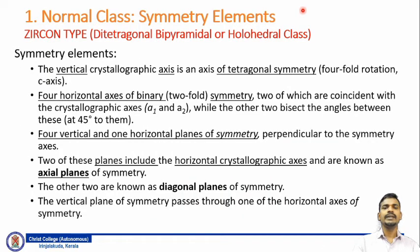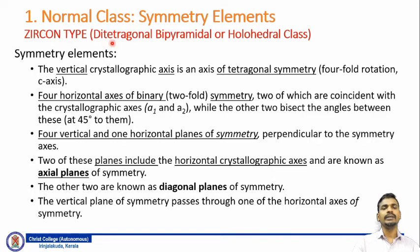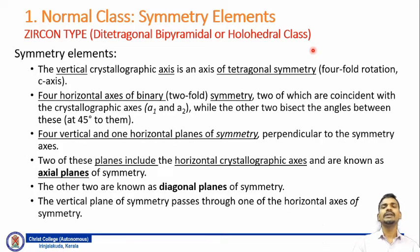The Tetragonal system is classified into different classes. The first one, having superior symmetry, is known as the normal class, and the type mineral of the normal class is zircon. The class is also variably called the di-tetragonal bipyramidal or holohedral class, because of the shape and properties of the forms of the mineral in the class.